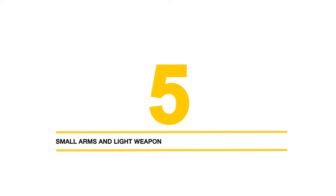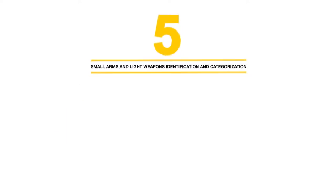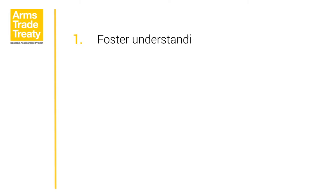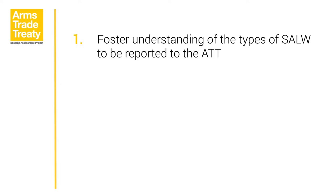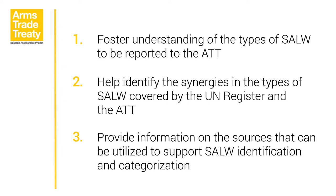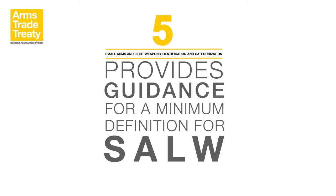Module 5 – Small Arms and Light Weapons Identification and Categorisation. Module 5 provides potential definitions for the types of conventional arms contained in Article 2, Paragraph 1H of the Arms Trade Treaty, namely Small Arms and Light Weapons, also known as SALW. The module has three aims: to foster understanding of the types of SALW to be reported to the ATT; to help identify synergies in the types of SALW covered by the UN Register and the ATT; and to provide information on sources that can be utilised to support SALW identification and categorisation. This module draws upon several potential sources of guidance for the definitions of SALW and for identification and categorisation, providing guidance for a minimum definition and some indications for a broader scope.